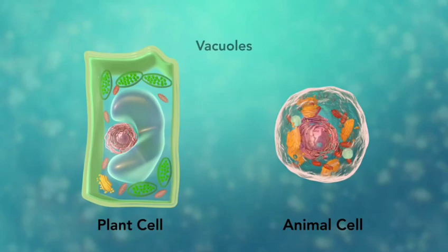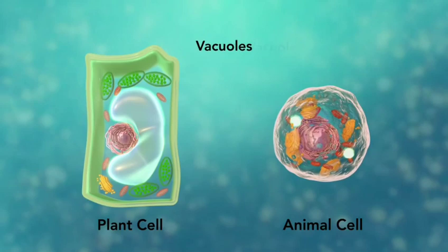Vacuoles are sac-like structures that store different materials. Here in this plant cell, the central vacuole stores water.